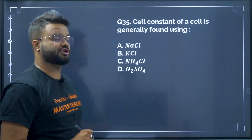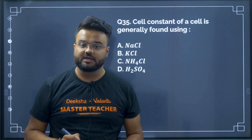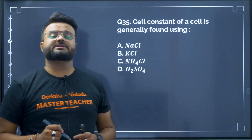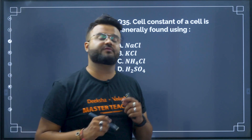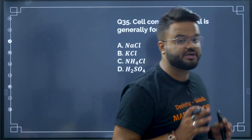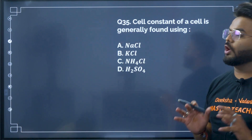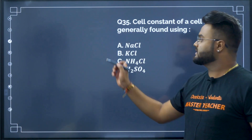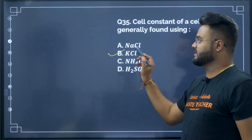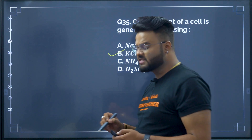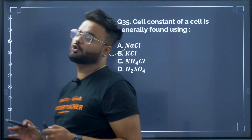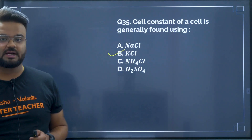Coming back to question number 35: the cell constant of a cell is generally found using a standard KCl solution. This is a direct question from your NCERT.